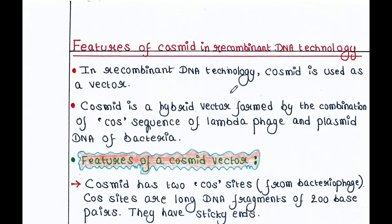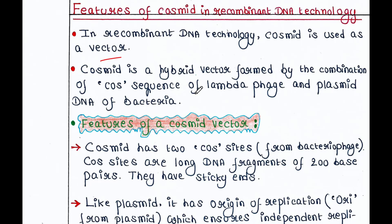In recombinant DNA technology, Cosmid is used as a vector. We have seen in the last lecture that Plasmid is also used as a vector. Cosmid is actually a hybrid vector. It is formed by the combination of the cos sequence of Lambda phage and Plasmid DNA of bacteria. So it contains two parts: the cos sequence of Lambda phage, and the Plasmid DNA of bacteria.